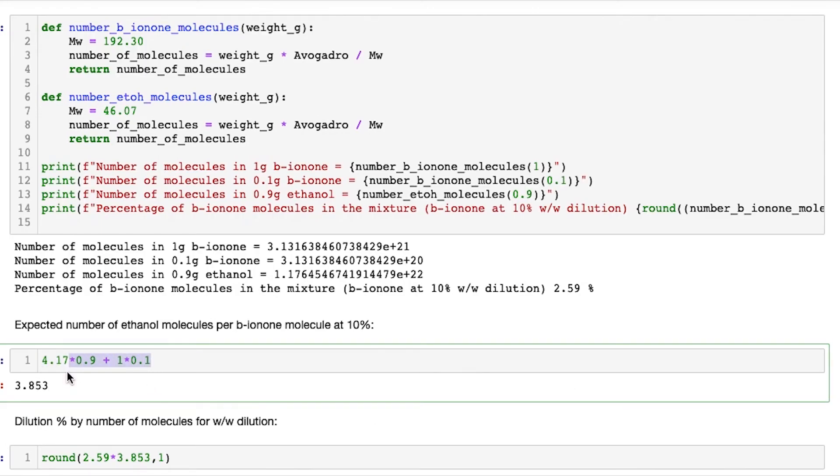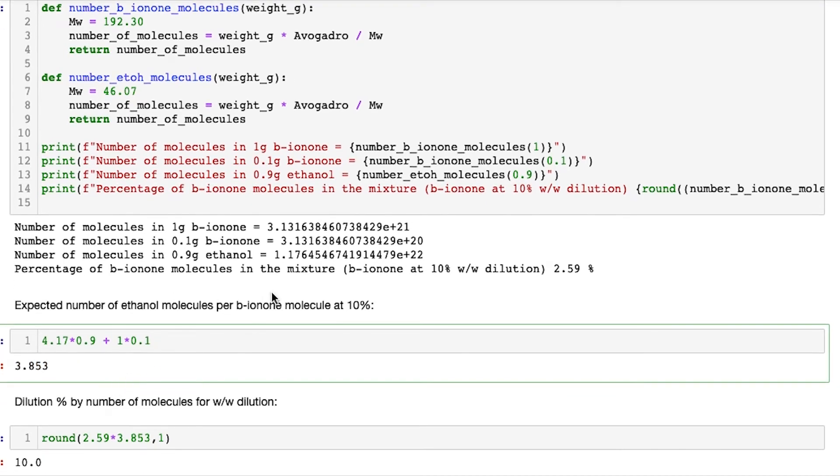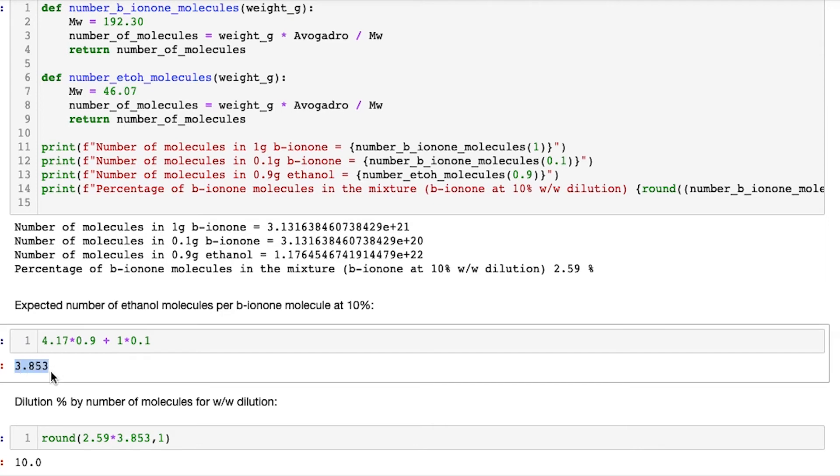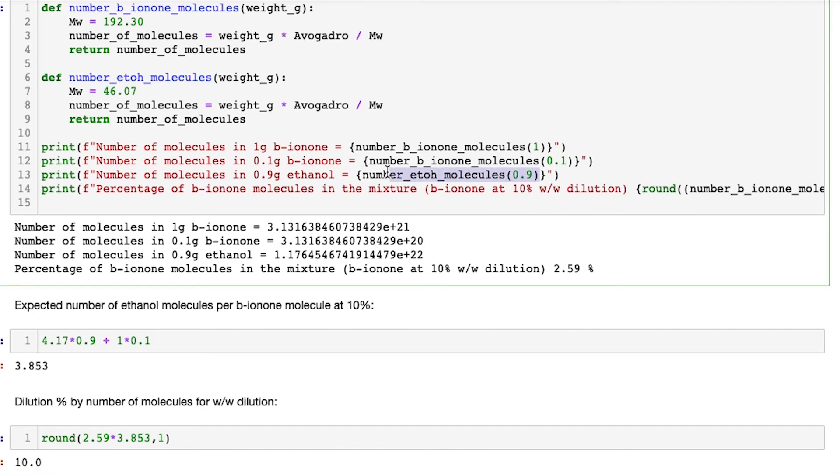Okay, so this calculation here is to say how many more molecules of ethanol would we expect to have over those of beta-ionone? So what we find is we should get 3.853 times the number of ethanol molecules to beta-ionone to make our solution 10%. Using this 2.59 that we calculated above, if we times that together with the 3.85 that we're expecting, we get our 10% as expected. So all this is effectively showing is that if we measure by weight and we try to use 10% in weight, it ends up that we've actually got 10% in terms of number of molecules. So that's good. We know that when we measure in weights we are doing something directly related to the actual number of molecules in our mixture.